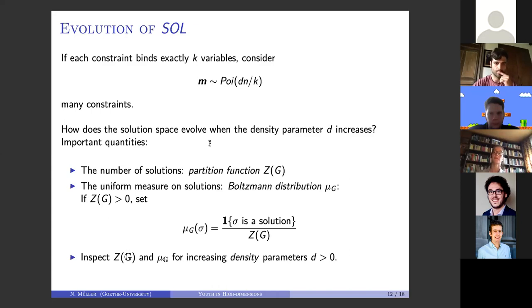Here we can introduce a Boltzmann distribution, which in our case, for random constraint satisfaction problems, just counts the number of solutions. For each constraint, it forbids some value configurations of the adjacent variables. If we combine all the constraints, we can count the number of solutions to these constraints and normalize them to get a probability distribution.